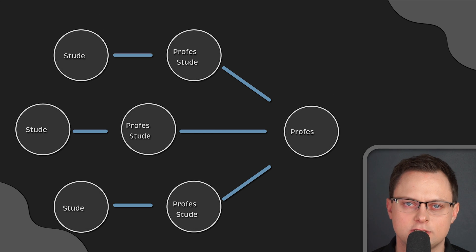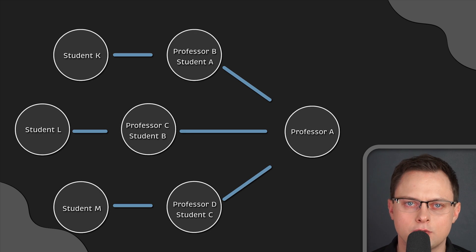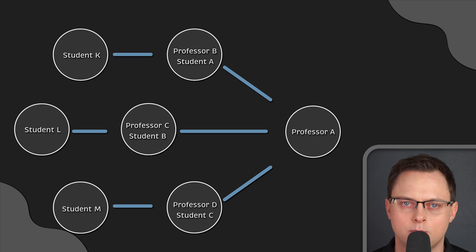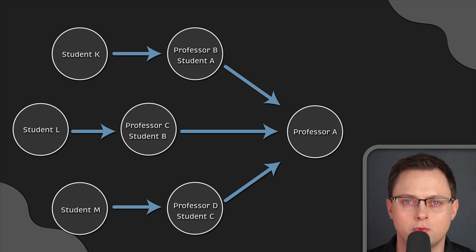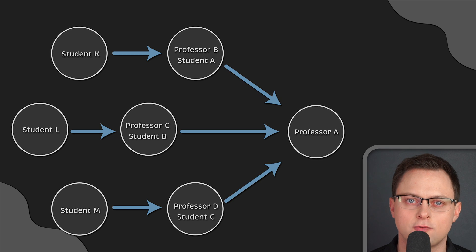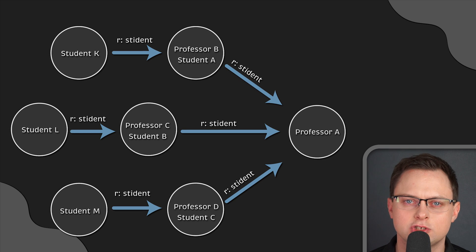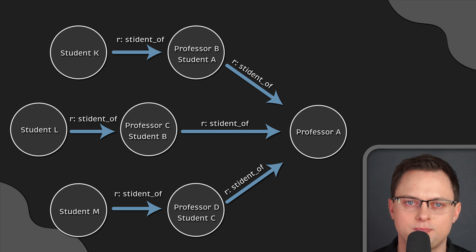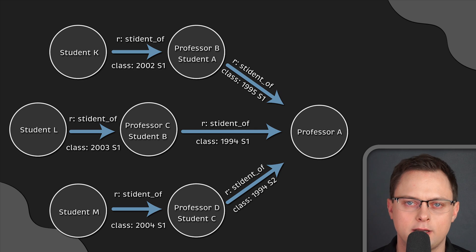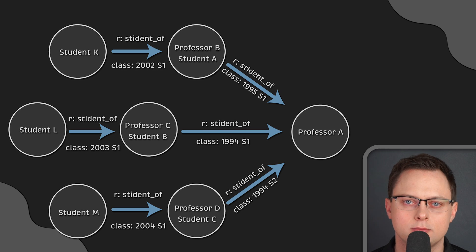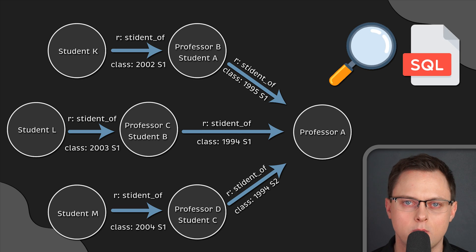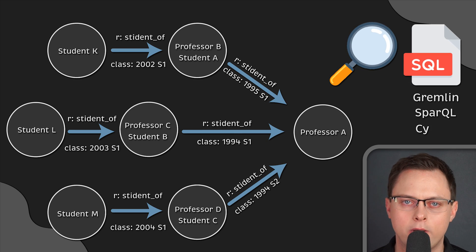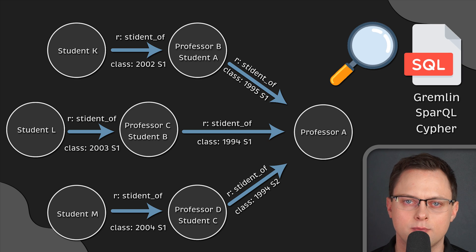Let's describe some traits of a graph database. First, you have nodes, which are essentially records. Connected to those nodes is a type of relationship, which can have a direction and a property associated with it. In our case, the direction points from the original professor, the relationship type is 'student of', and the property is the year and semester where they were taught. Querying this database isn't like a typical SQL query — graph database vendors often have their own query language, which is something the industry is still working out.